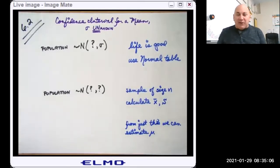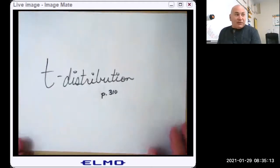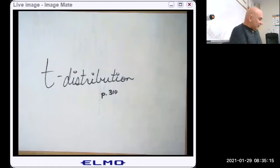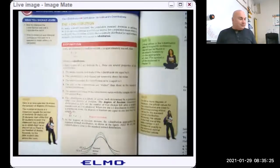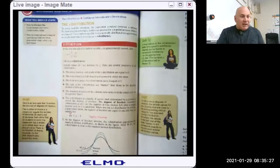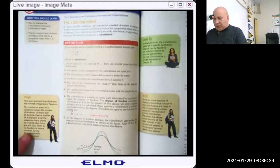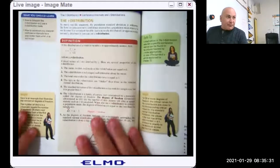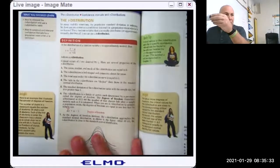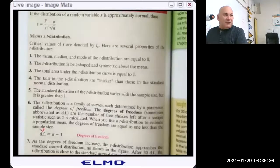What that will do, however, is it will require us to learn how to do a new type of table, which is the T table showing the T distribution. So let's take a look in our current book on page 310, and I encourage you to take out your book and follow along.